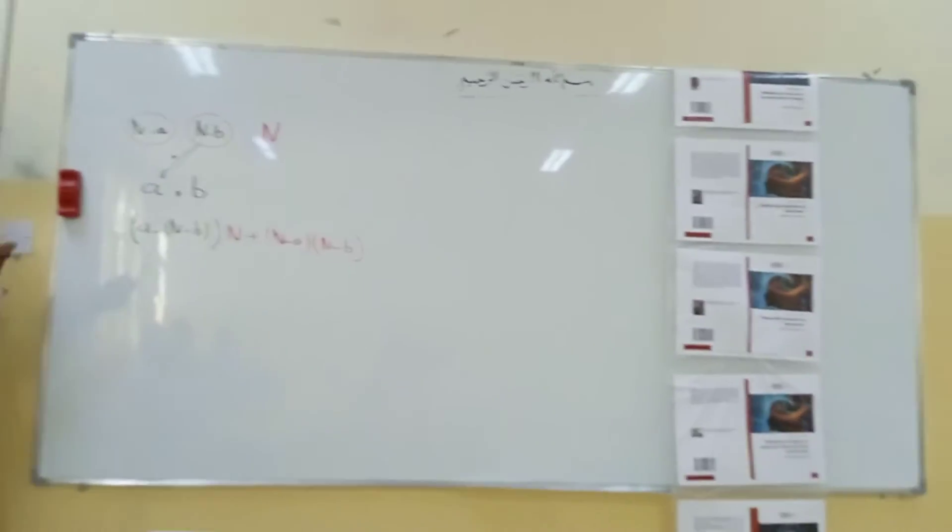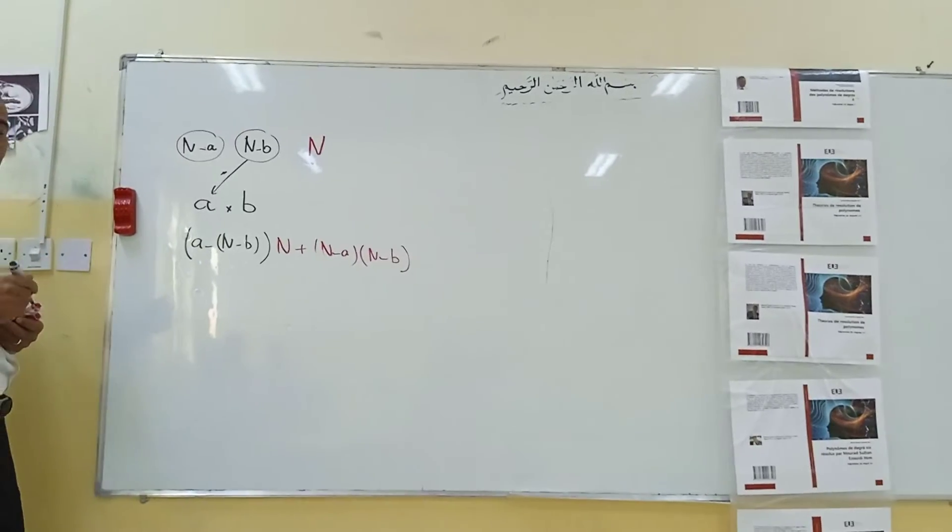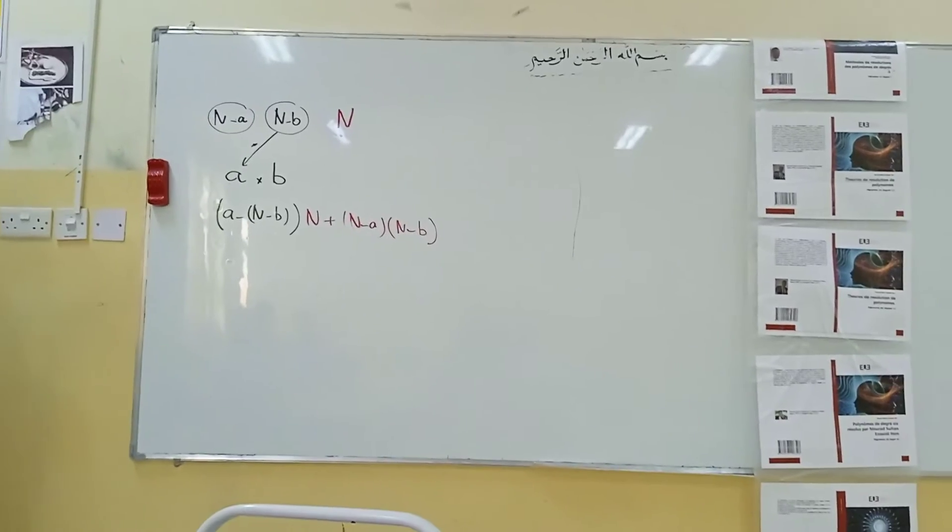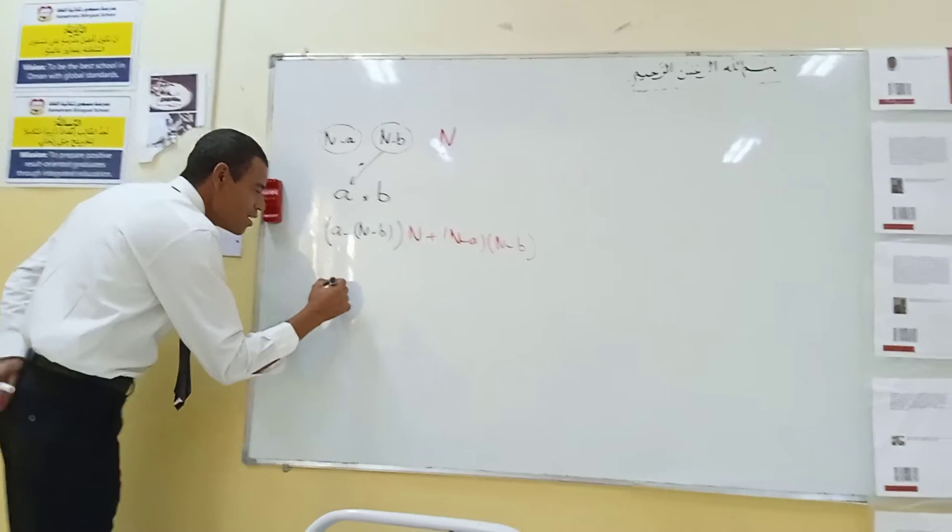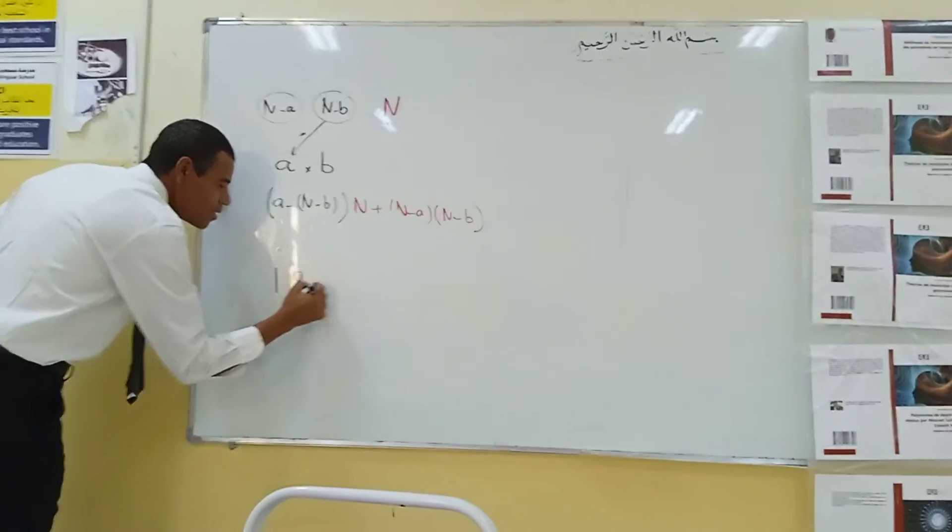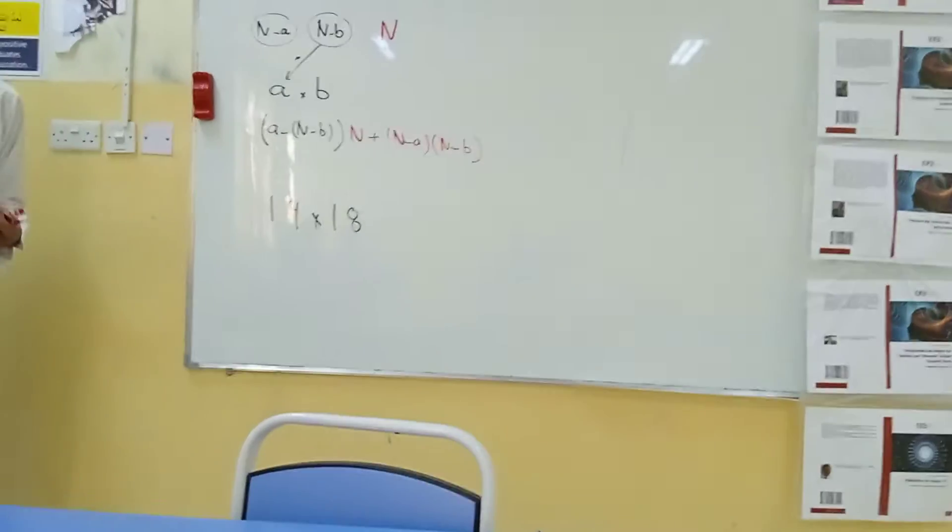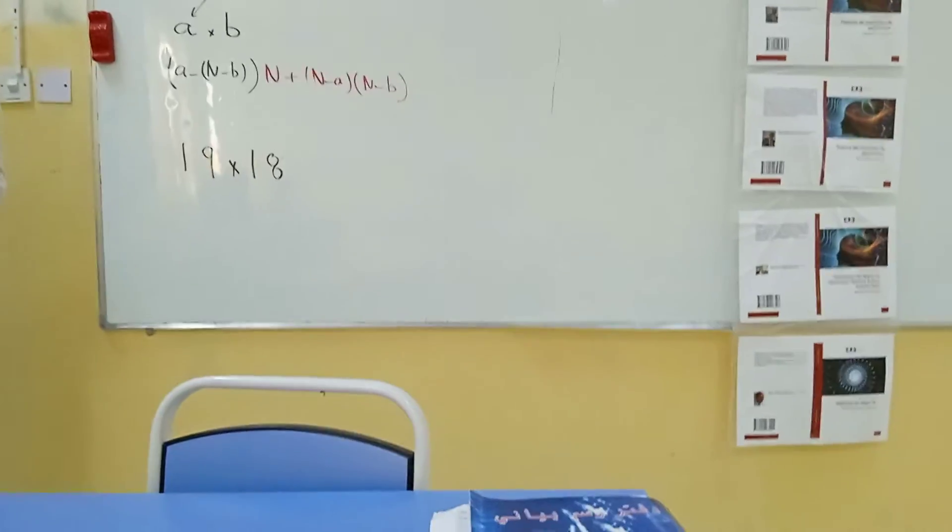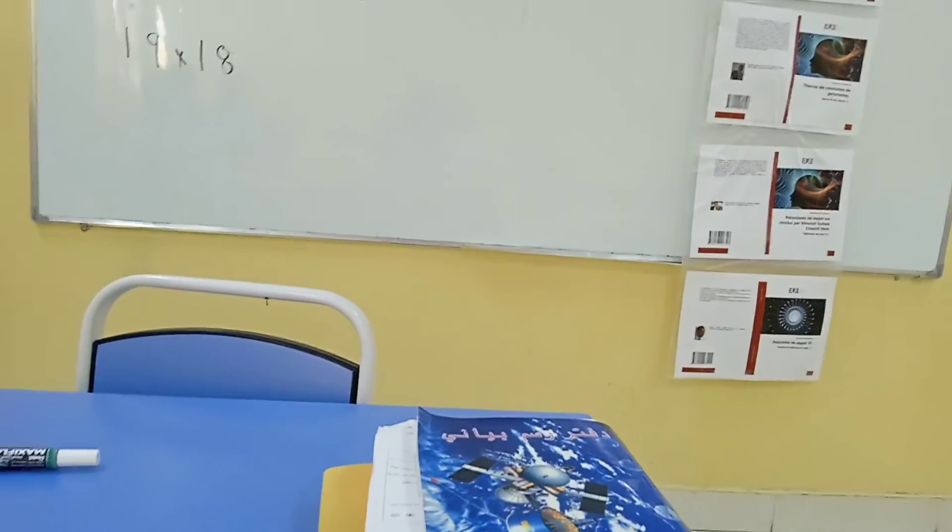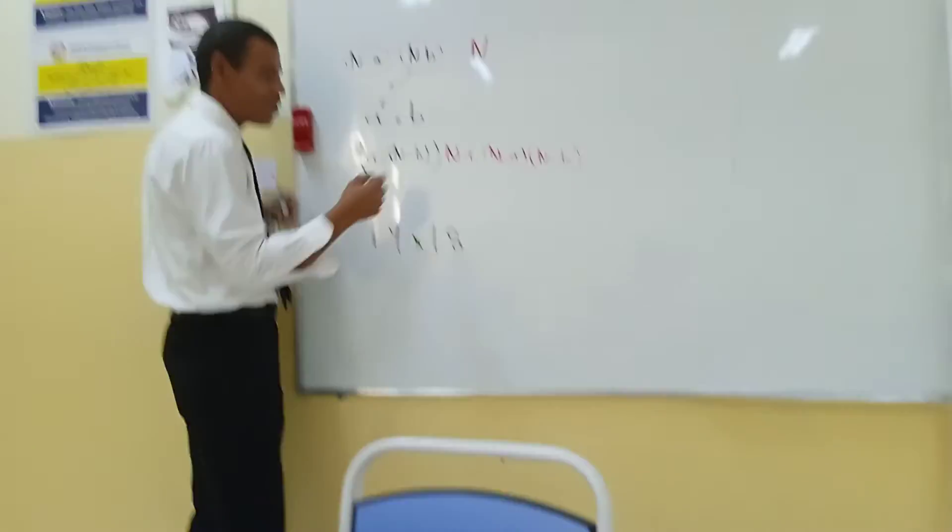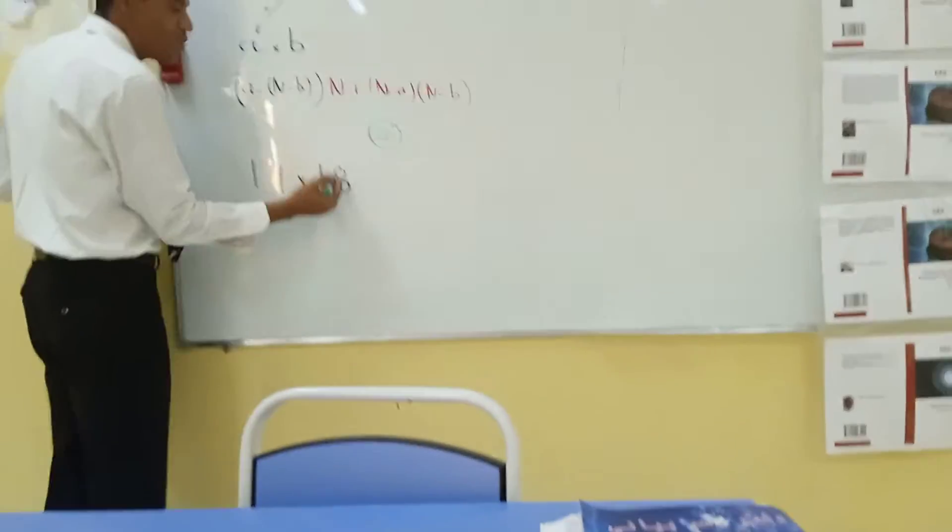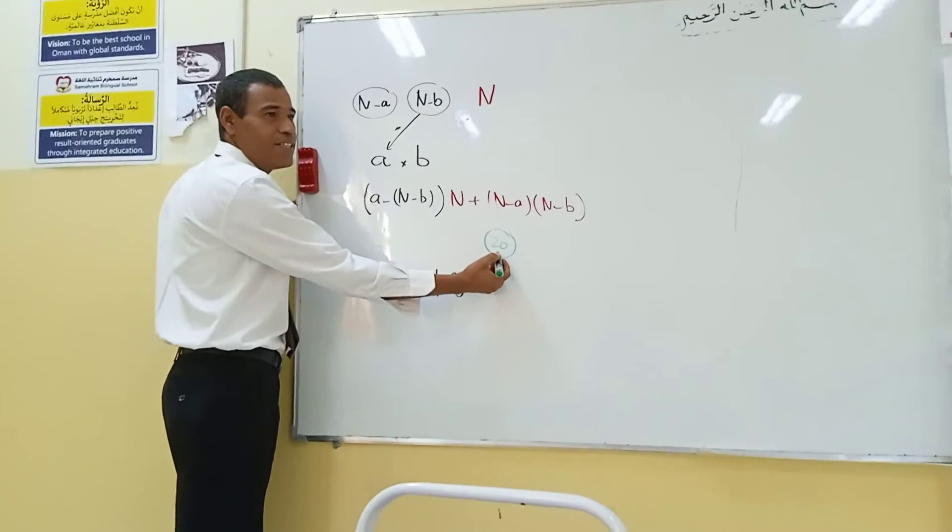I will start, for example. Mr. Tahar told me how can we multiply 19 by 18. Some students will face some difficulties while doing these examples. So it's easy here. 18 is near to 20. I will write here 20.